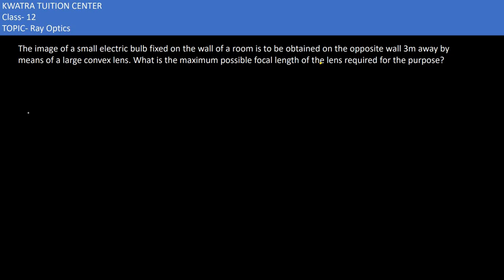Let's start with the next question. The image of a small electric bulb fixed on the wall of a room is to be obtained on the opposite wall, which is 3 meters away, by means of a large convex lens. What is the maximum possible focal length of the lens required for the purpose?